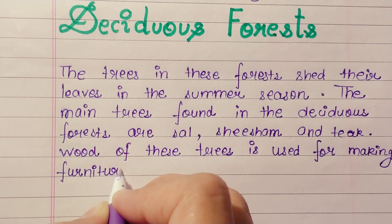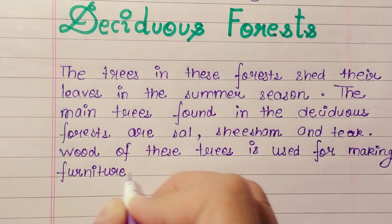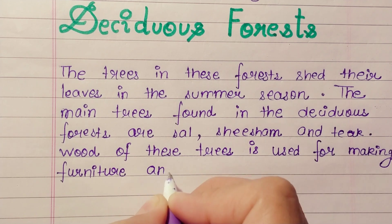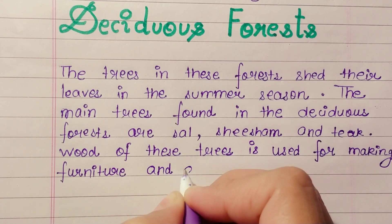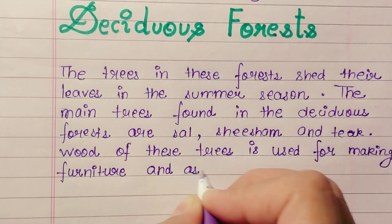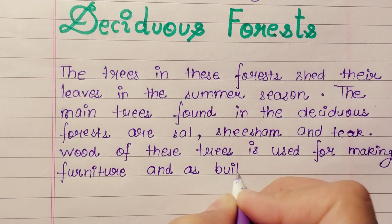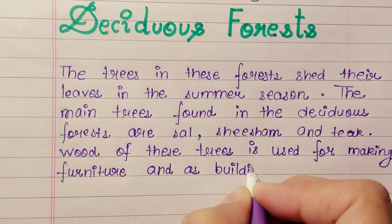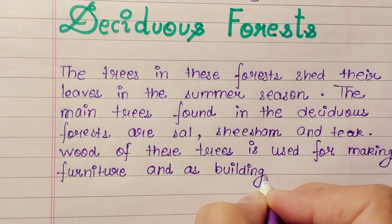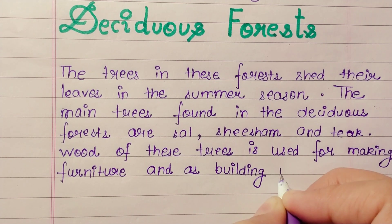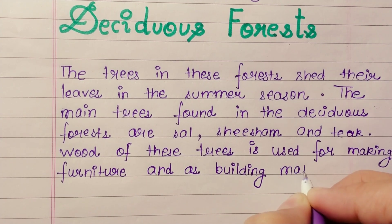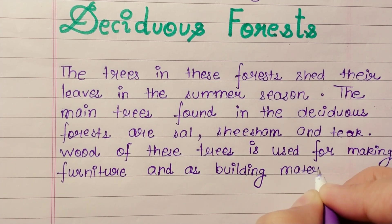The main trees found in the deciduous forest are sal, shisham, and teak. The wood of these trees is used for making furniture and as building material.